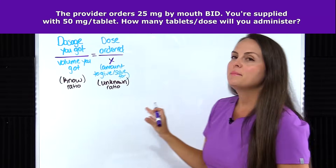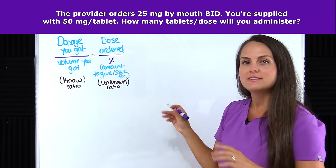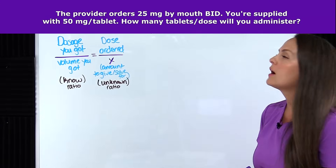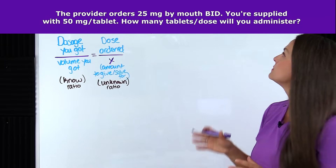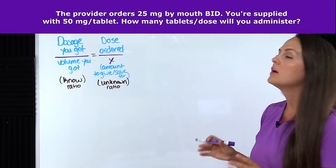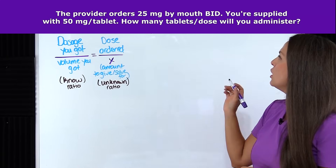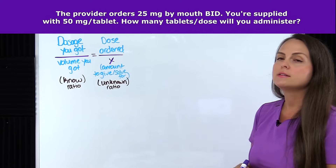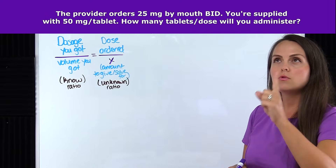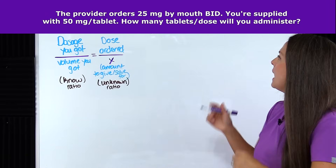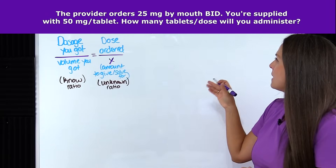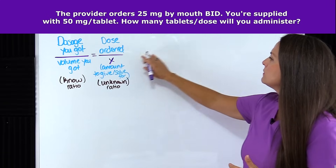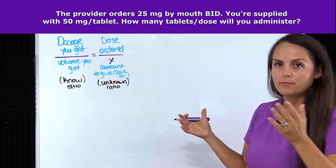So let me solve this problem so you can see what I'm talking about. The provider orders 25 milligrams by mouth BID — that's twice a day. You're supplied with 50 milligrams per tablet, so each tablet has 50 milligrams in it. How many tablets per dose will you administer? That's what we're trying to figure out — that will be our x, our tablets.